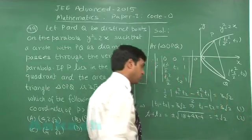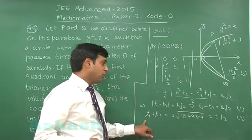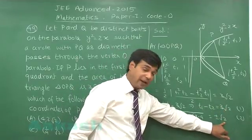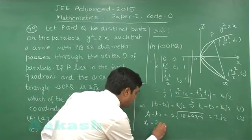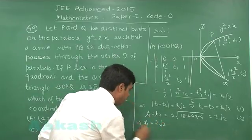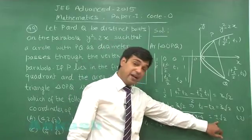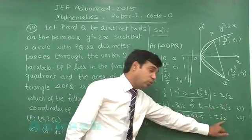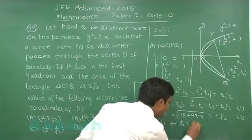Let us take equation 2. When we take positive sign on adding these 2, we get 2 t1 is equal to 4 root 2. So, this gives me t1 is equal to 2 root 2 or if I take negative sign, then we get 2 t1 is equal to 2 root 2 that is t1 is equal to this time root 2.